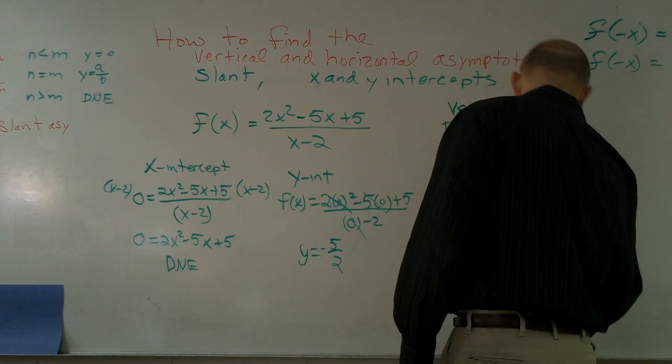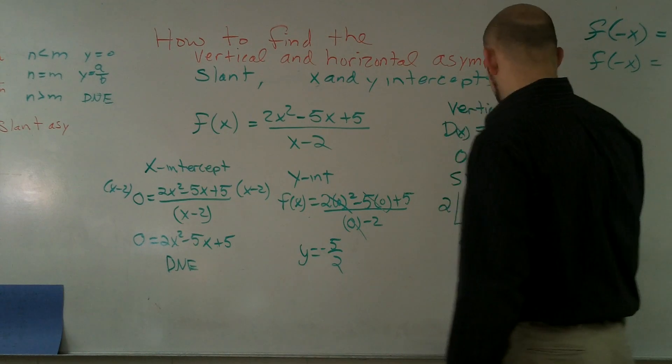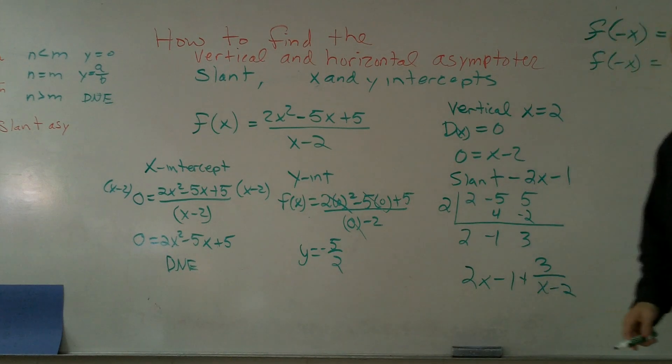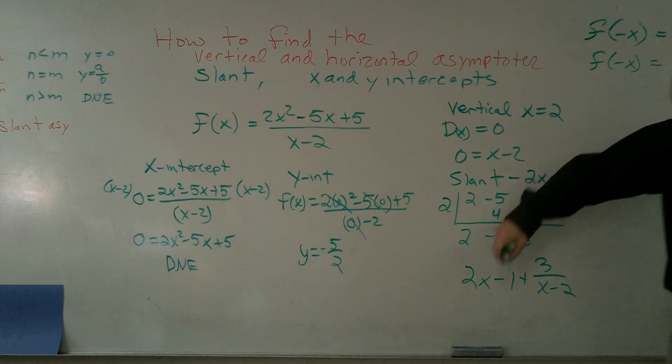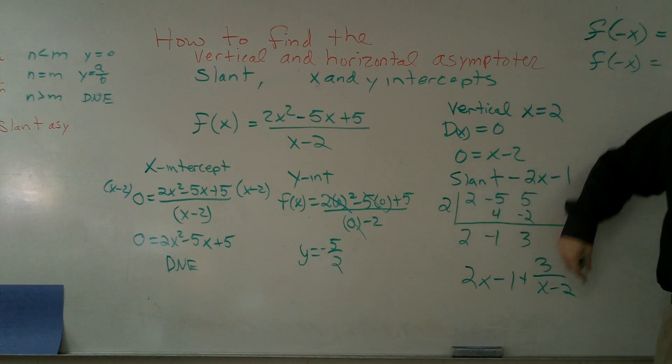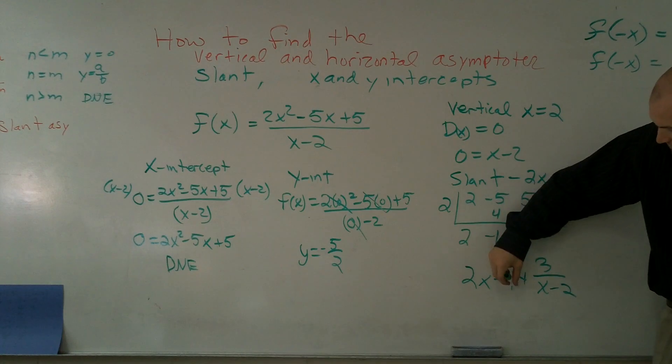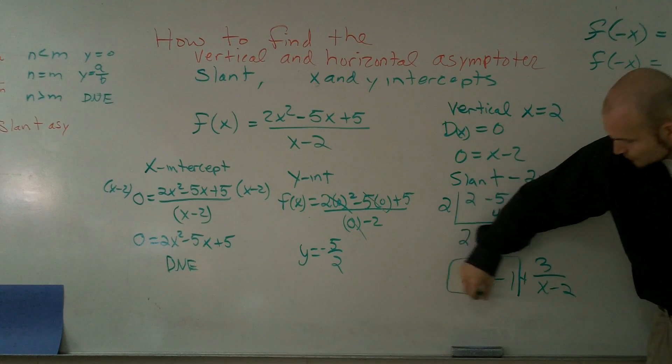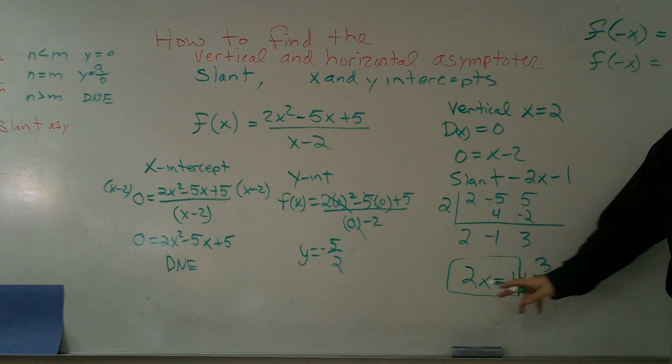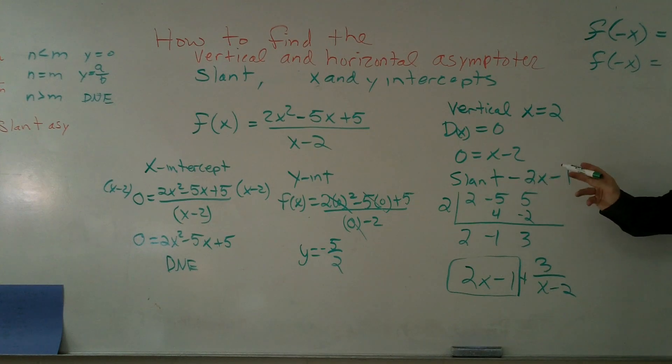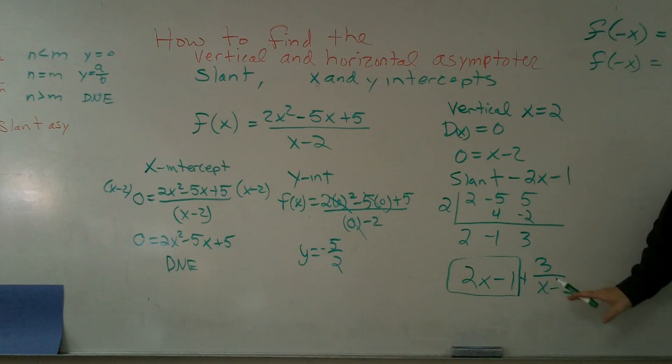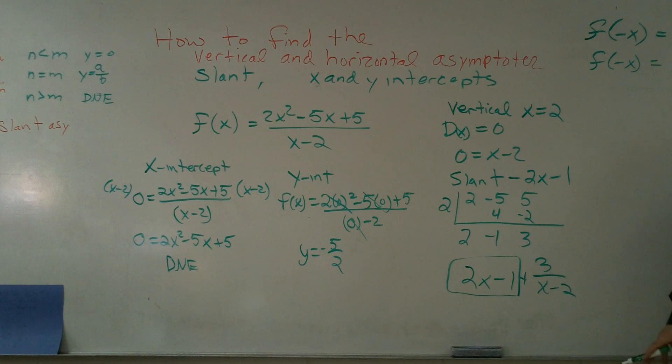And all I'm saying is, out of this, this is your answer, correct. All I'm saying is out of your answer, that's your slant asymptote. Only take this part to be your slant asymptote, not your y-intercept. Only take this part to be your slant asymptote. You're not concerned with the remainder.